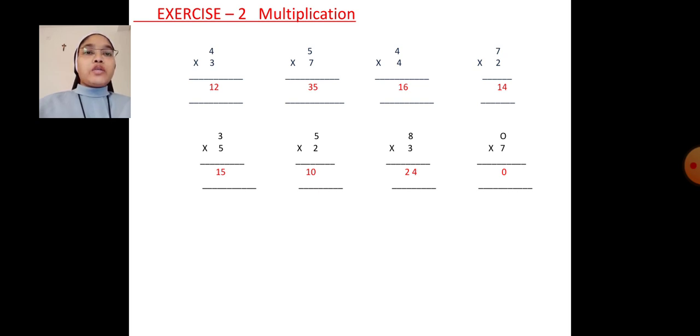5 into 7. 7's table we have to say 5 times. 7 5's are 35. Next, 4 into 4. 4's table we have to say 4 times. 4 4's are 16.